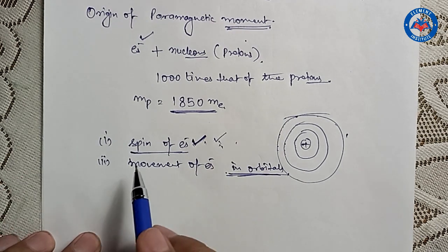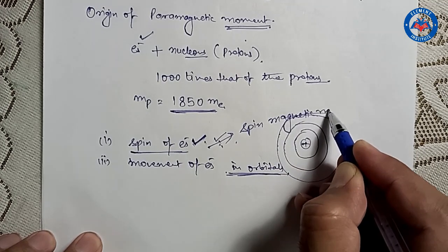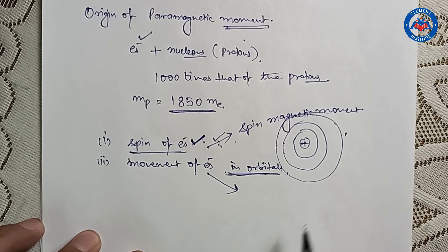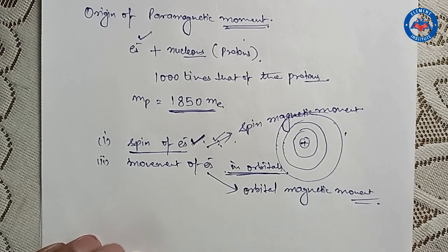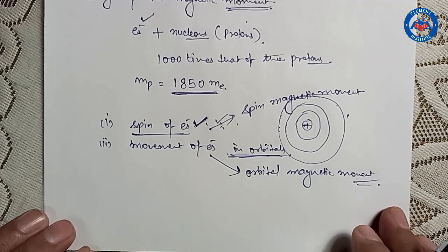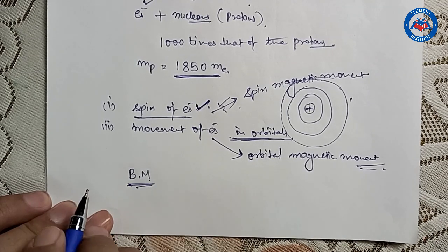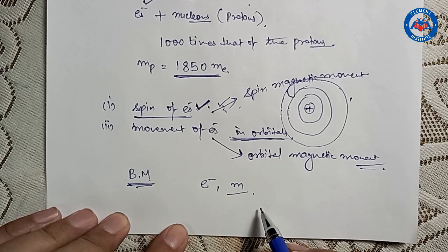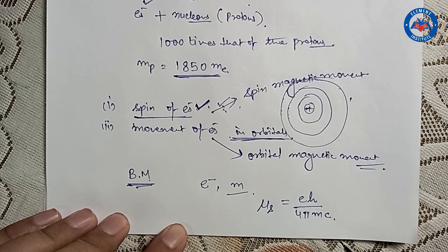The magnetic field produced due to the spin of the electron is known as the spin magnetic moment, whereas the magnetic moment produced because of the movement in an orbital is known as the orbital magnetic moment. The magnetic moment of a substance is generally expressed in Bohr magnetons. The magnetic moment of an electron having charge E and mass M is given as μₛ = Eh / (4πmc), where h is Planck's constant, c is the velocity of light, m is the mass of the electron, and E is the charge of the electron.